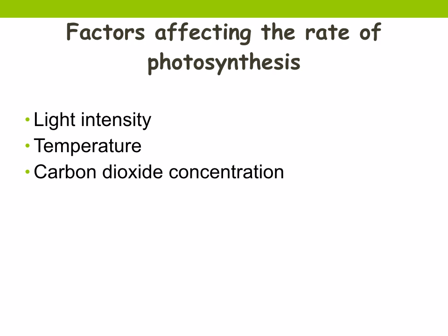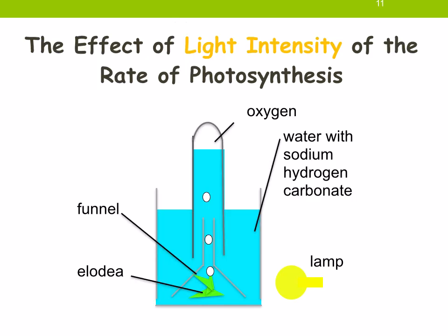The different factors we're going to discuss are light intensity, temperature, and carbon dioxide concentration. Starting with light intensity: to look at the effect of light intensity on the rate of photosynthesis, you would set up this apparatus. You've got elodea, which is a pond weed. It's going to photosynthesize and produce oxygen bubbles. You can collect the oxygen or count the number of oxygen bubbles in a certain time period. You could move the lamp towards or away from the plant, or add more lamps to vary the light intensity.